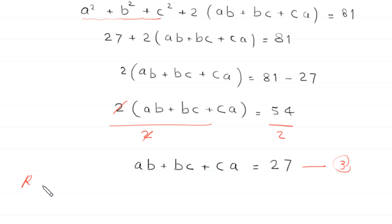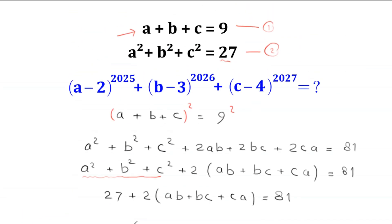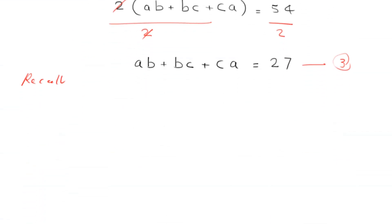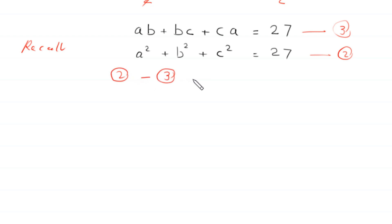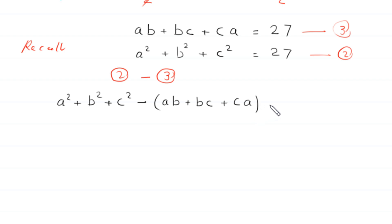Now we recall equation number 2: a squared plus b squared plus c squared is equal to 27. From equation 2 we subtract equation number 3. This becomes a squared plus b squared plus c squared minus ab plus bc plus ca, is equal to 27 minus 27.